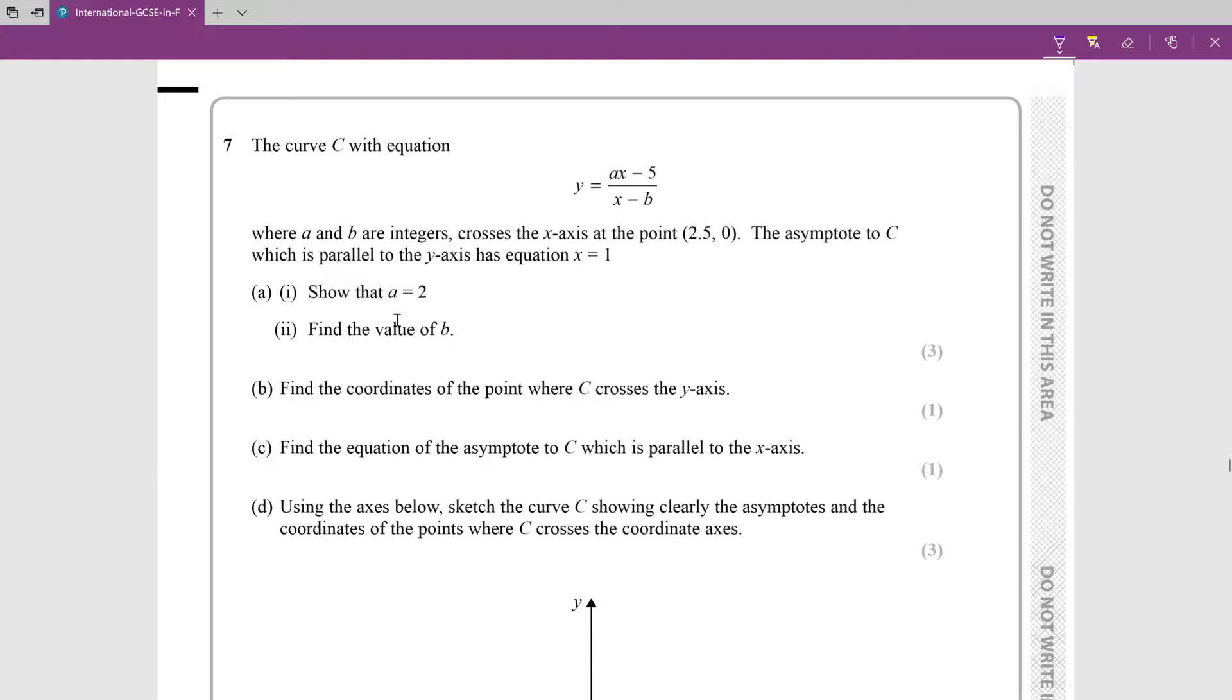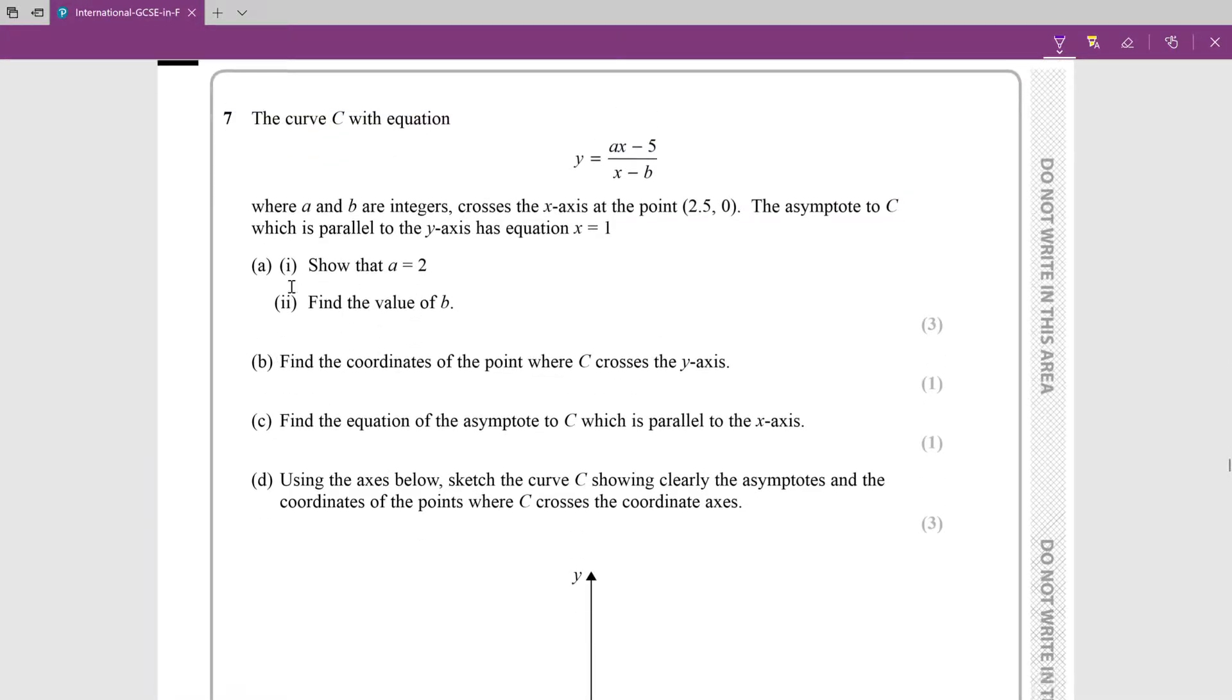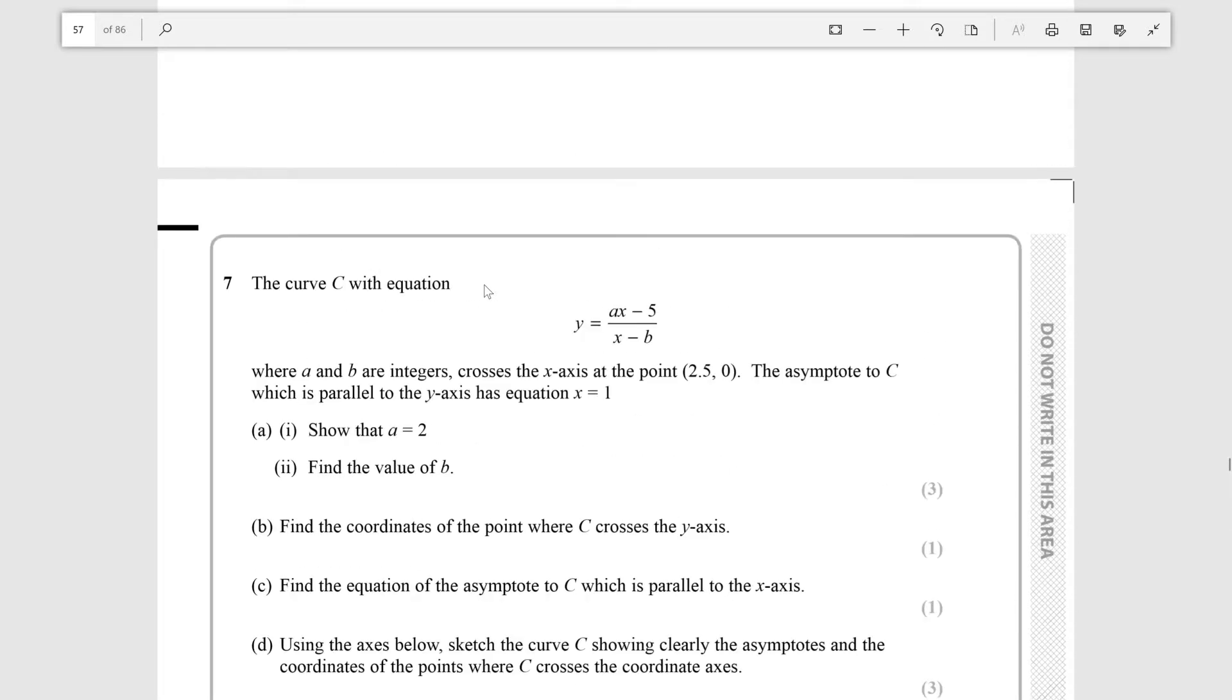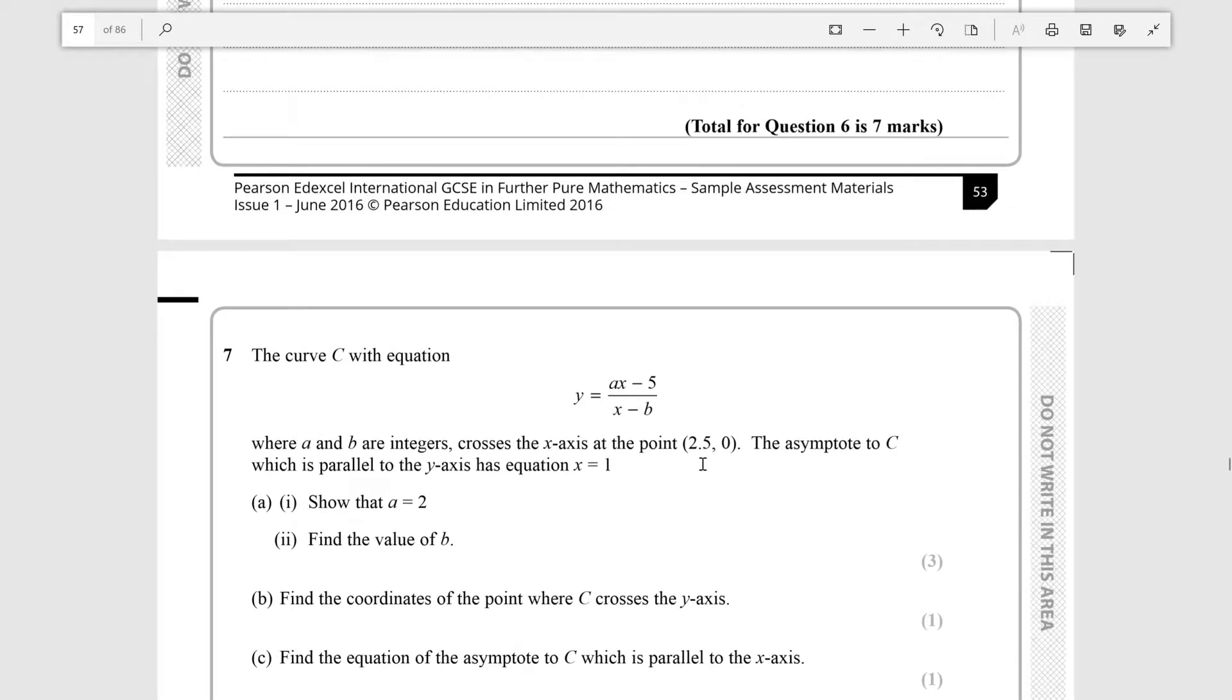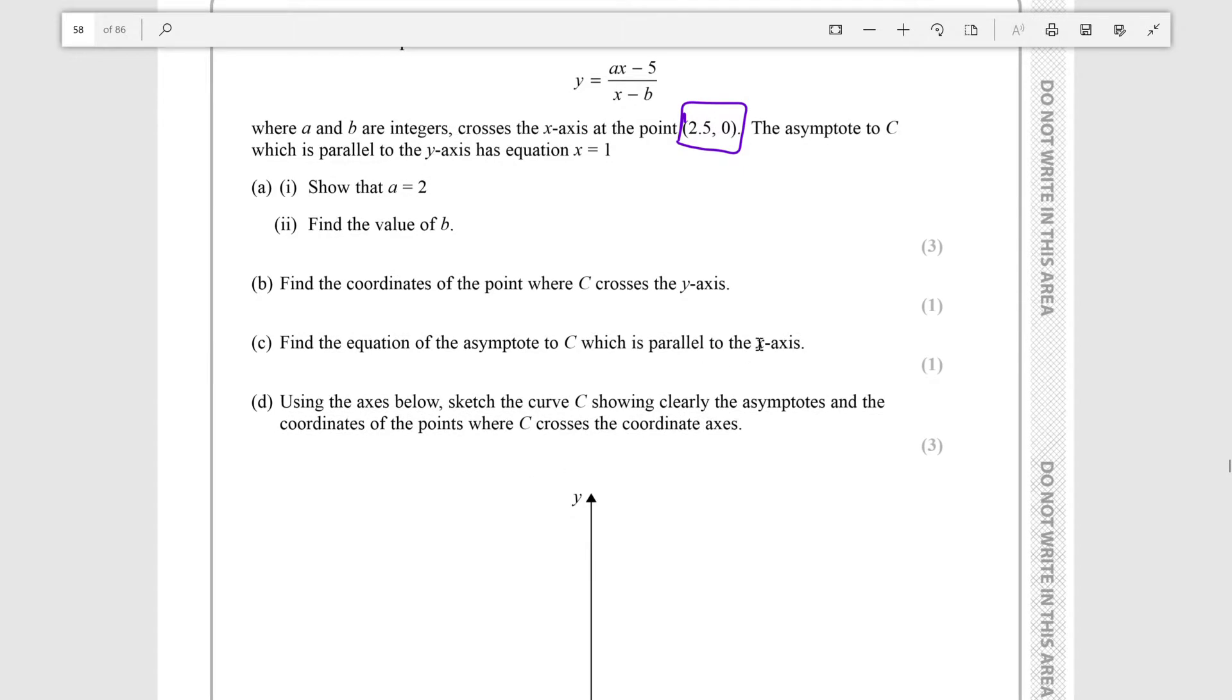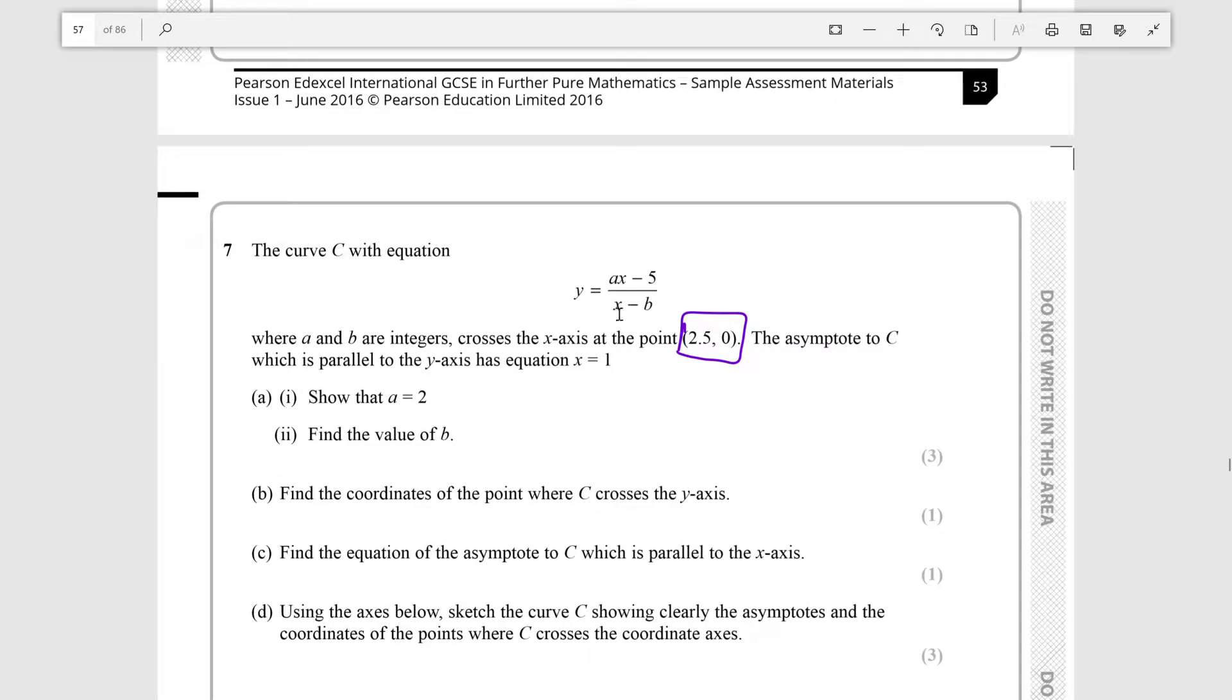So first we must show that a equals 2, and then we must find the value of b. To find the value of a, which is on the numerator, we need to use this information that it passes through the point (2.5, 0). Since we're looking for a y-intercept, someplace where y is 0, we can set the numerator equal to 0, because when the numerator equals 0, the entire function will be equal to 0.